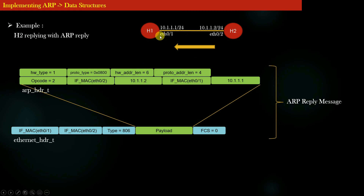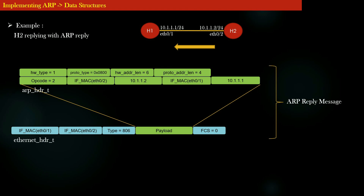The destination MAC in the ARP reply's Ethernet header is the MAC of interface Ethernet 0/1 of H1. In the ARP header of the reply, the first four fields remain constant, opcode is 2, source MAC and source IP are from H2's interface, destination MAC is the MAC of H1's interface Ethernet 0/1, and destination IP equals the source IP from the original ARP broadcast request. The source and destination fields are effectively flipped between the ARP broadcast request and the ARP reply.